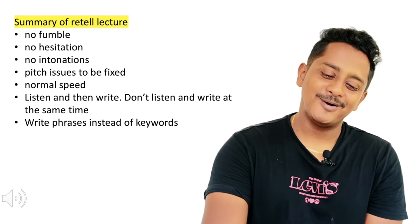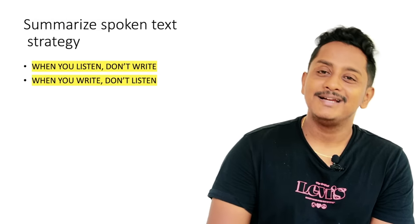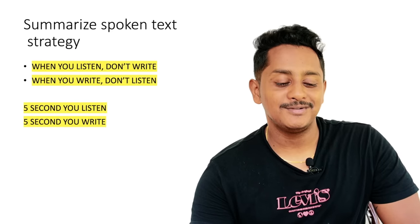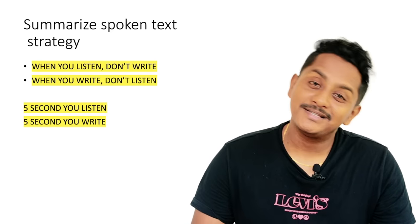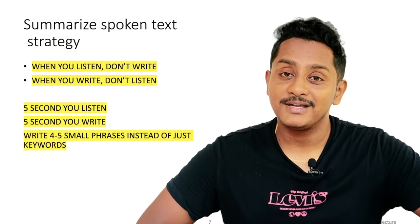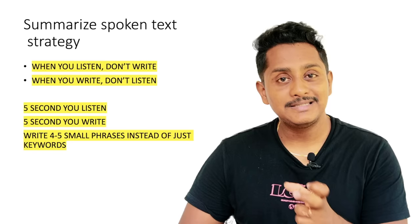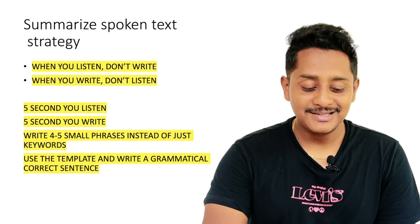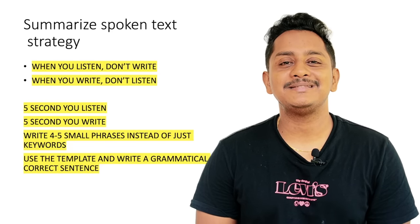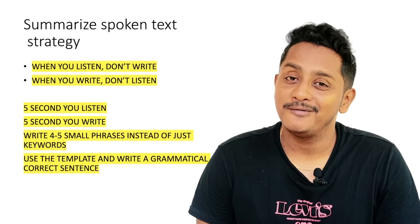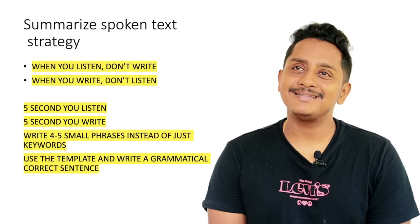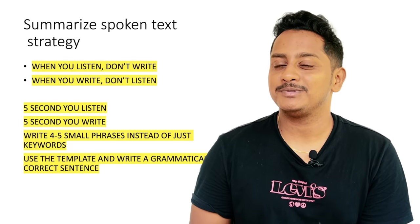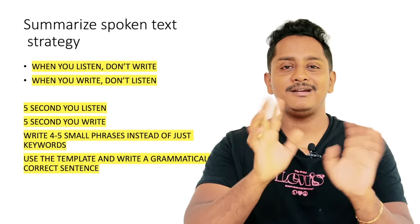For female candidates, pitch is usually not an issue unless your voice is very thin above 300 Hz; ideal pitch for female is 180–300. Speak at a normal speed — speaking too fast reduces content marks because the software can't understand you clearly. Listen then write; don't do both simultaneously. Write phrases instead of keywords. Now moving on to Summarize Spoken Text: the same strategy applies — don't listen and write at the same time. Listen for five seconds, then write. Write four to five small phrases instead of keywords. Don't pay anyone for a template.